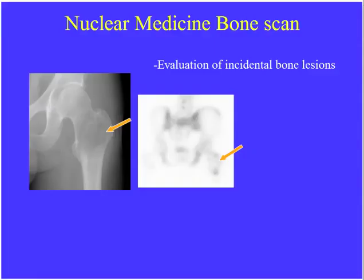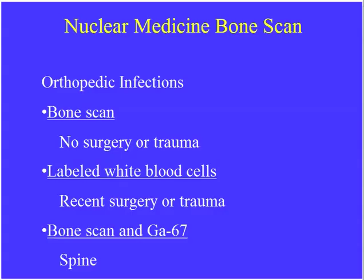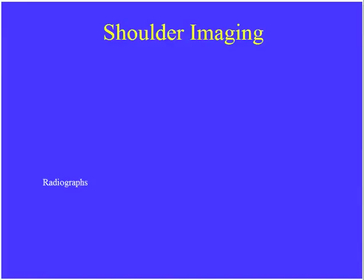Bone scan can also be shown in conjunction with a plain film to determine if there's activity within a bone lesion. Here's a lucent lesion picked up in the proximal femur — the bone scan is cold in that area, so it's not an active lesion. This turned out to be a bone cyst. For infections: if there's been no trauma or surgery, the bone scan is used first. If there has been recent trauma or surgery, labeled white blood cells have higher specificity for infection. In the spine, we can combine bone scan with gallium scan and look for discordant uptake.